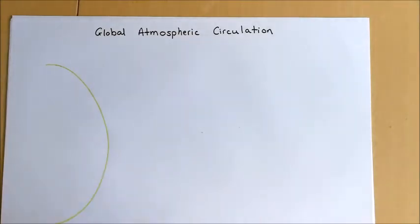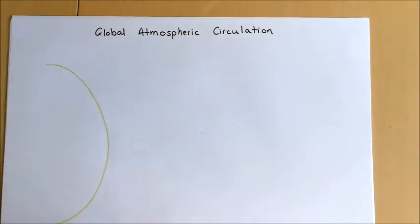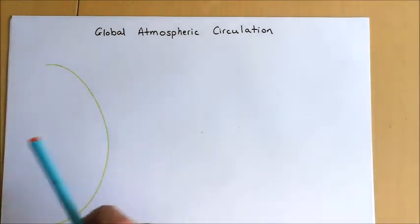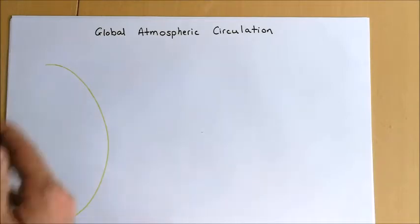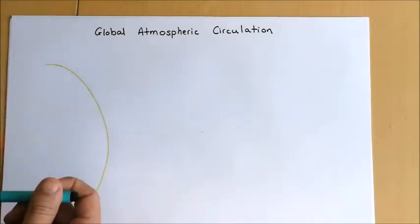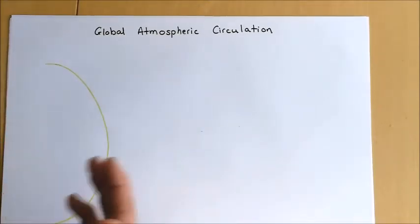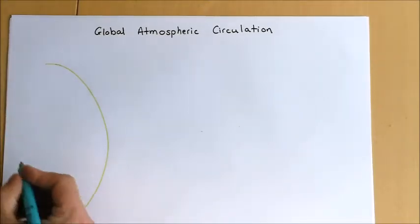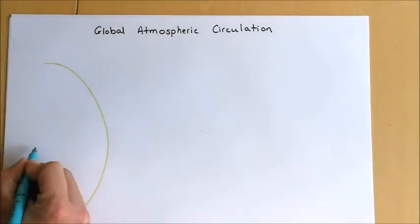We start off with the basic tricellular model of atmospheric circulation. We've got planet Earth here — half of it rather than doing a full circle, but it obviously works all the way across.